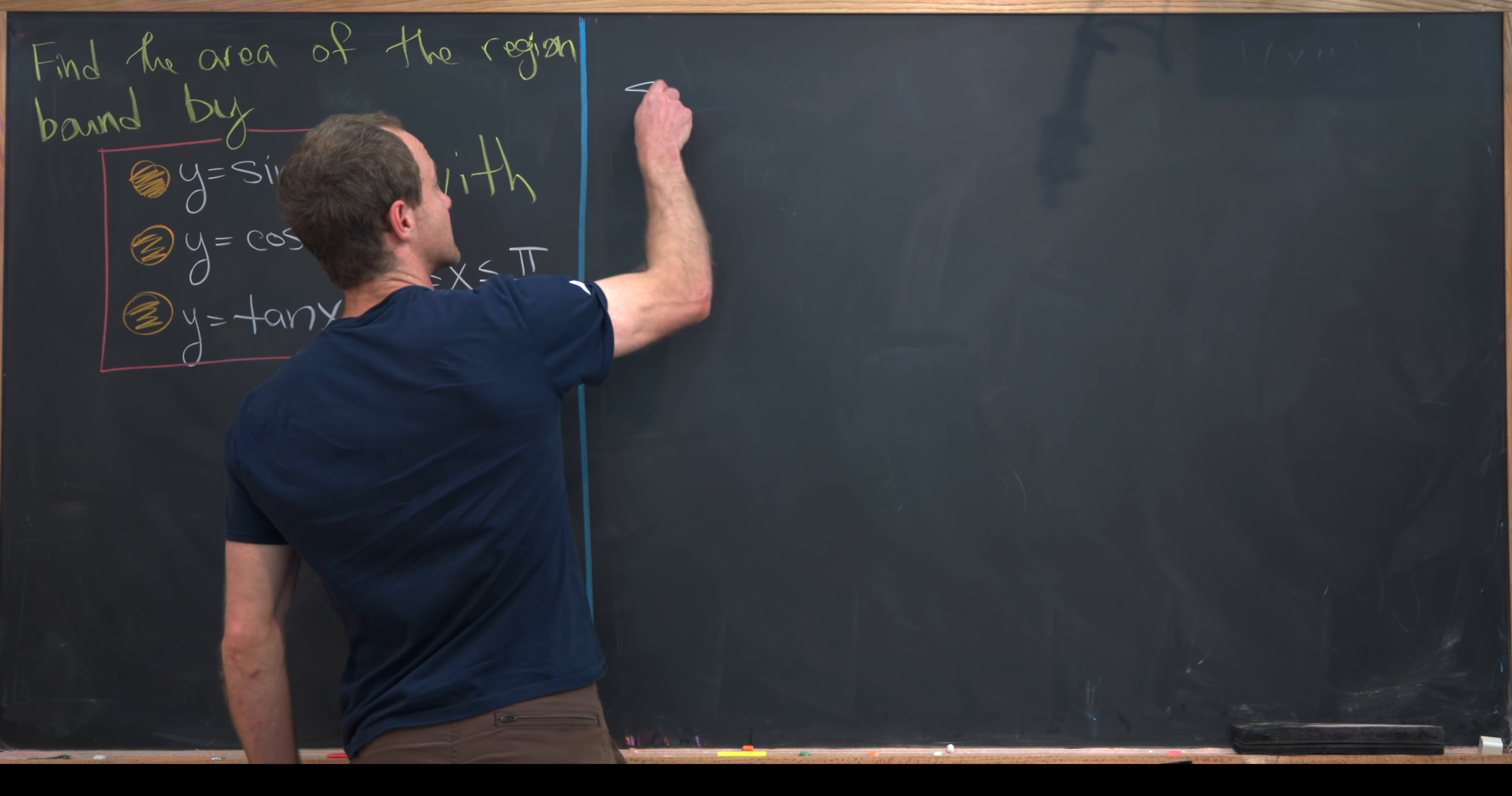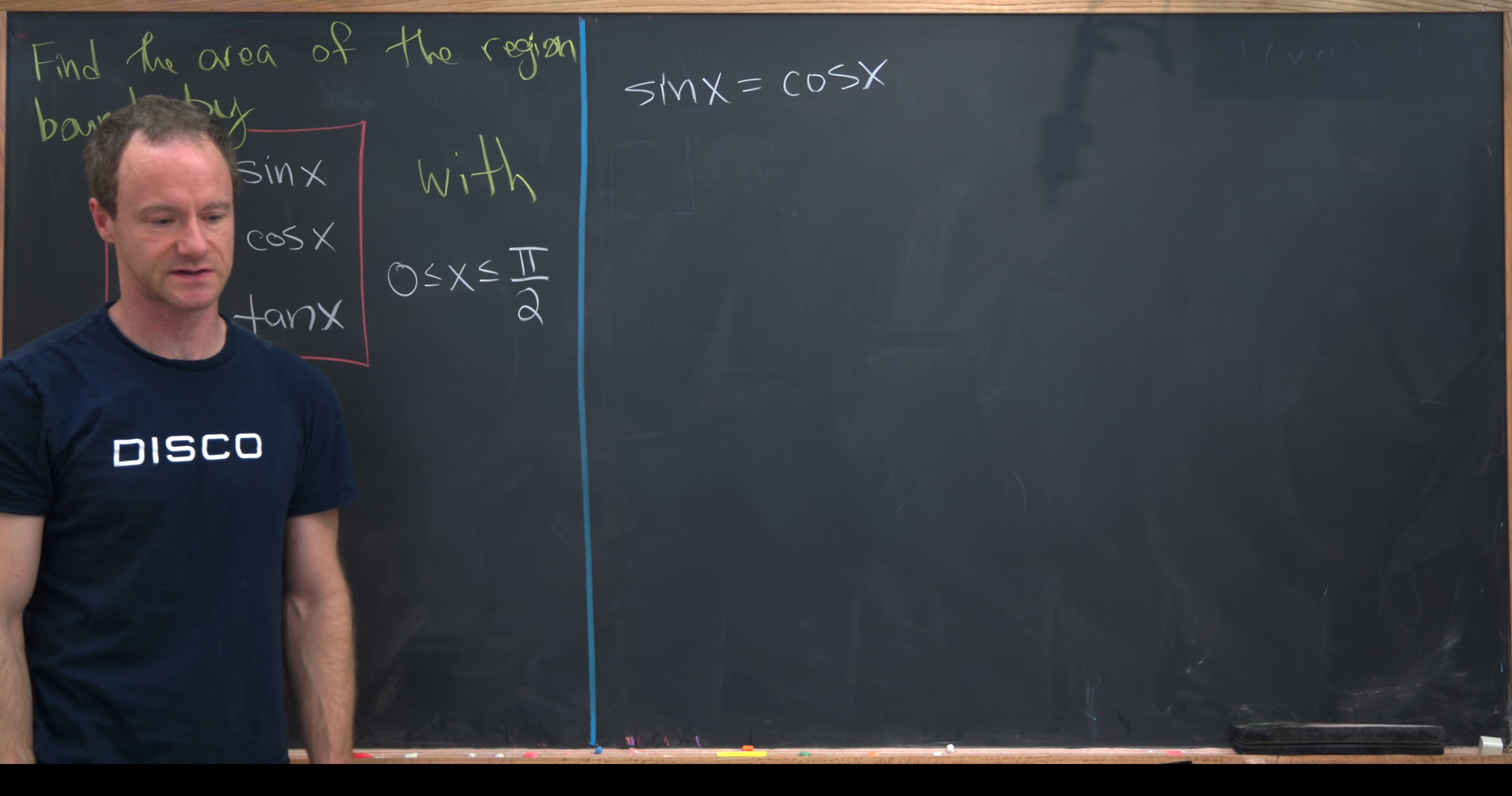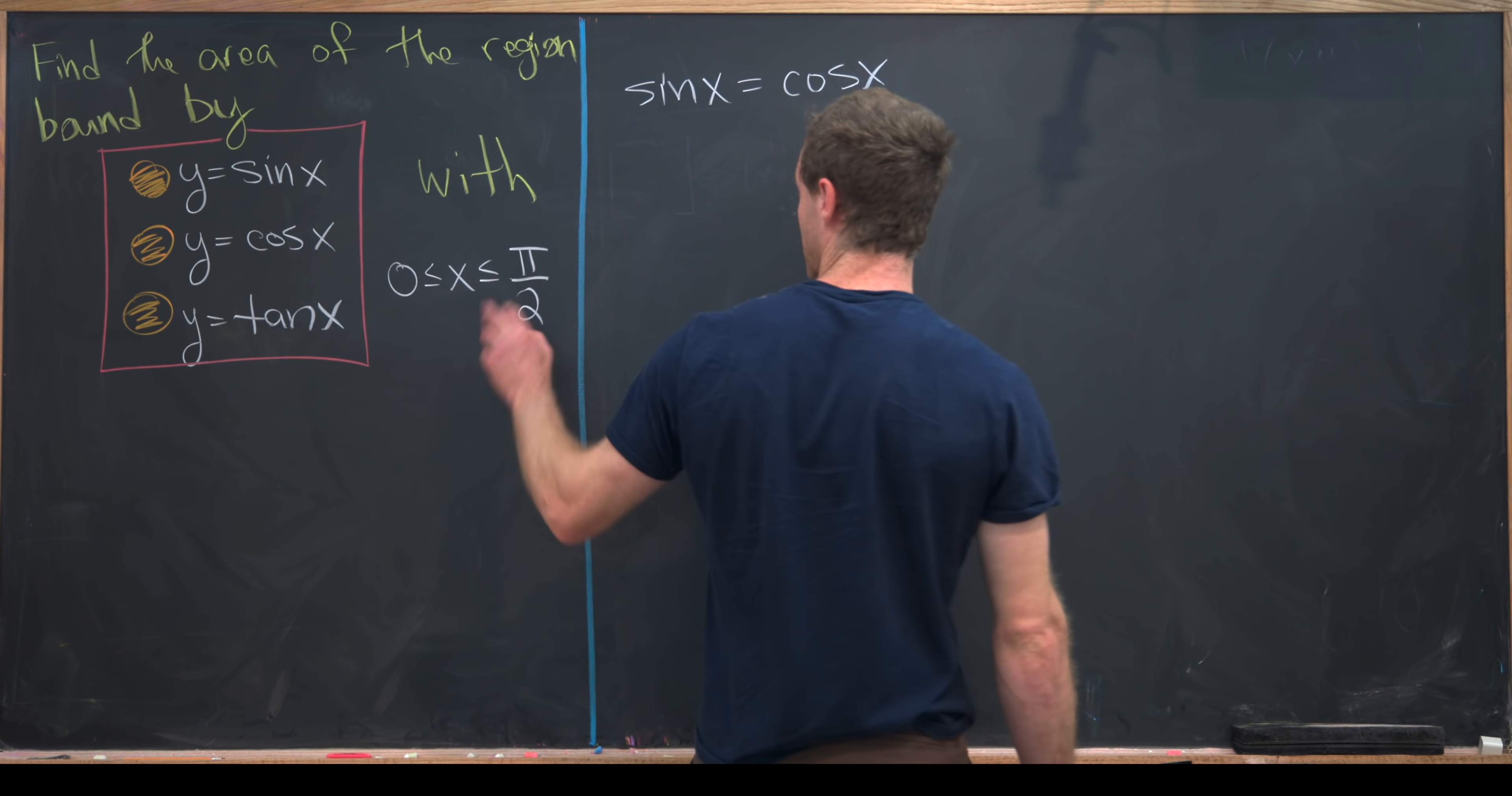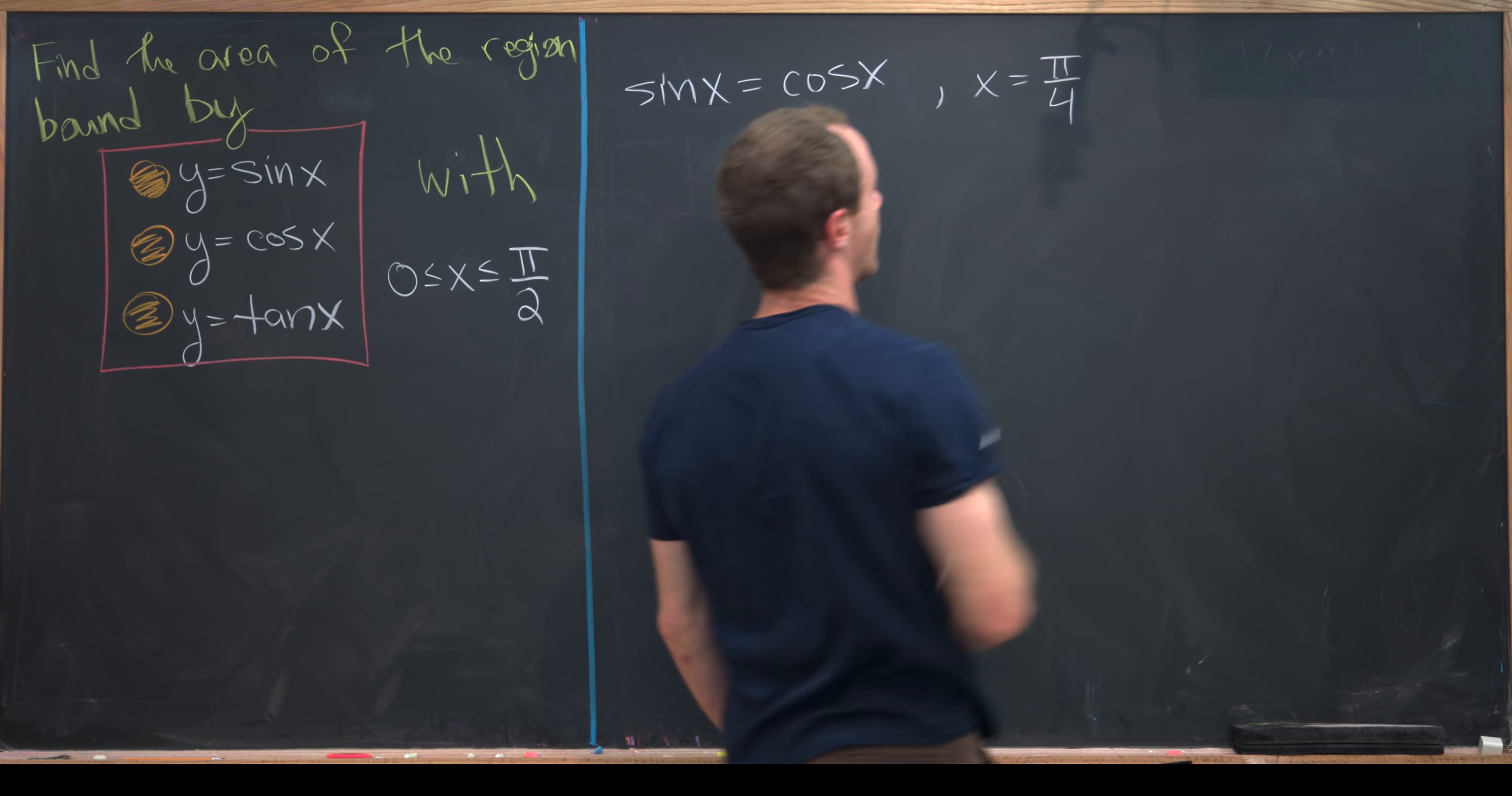The easiest thing to do first is to set sine x equal to cosine of x and see where those two curves would cross. But it's well known that between 0 and pi over 2, sine x equals cosine x when x is equal to pi over 4.